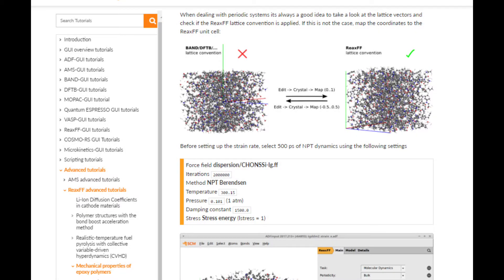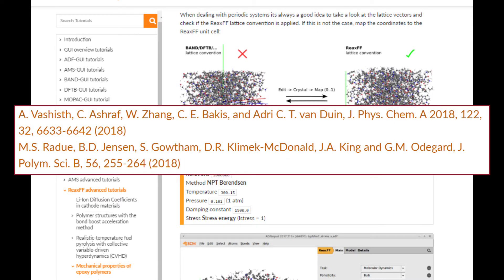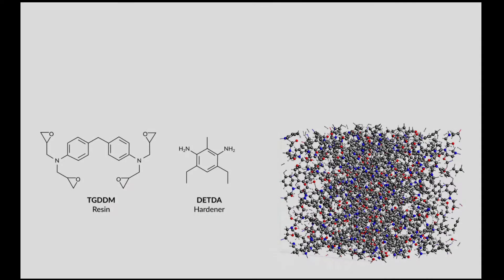The video is based on SCM's advanced online tutorial called Mechanical Properties of Epoxy Polymers, which itself is based on the workflows provided in two papers — both highly recommended reads for anyone interested in atomistic thermostat polymer simulations. The polymer used throughout this video was built from the tetrafunctional resin epoxy TGDDM using DATDA as a hardener, and the following cross-linking reaction was used to create the polymer structure.